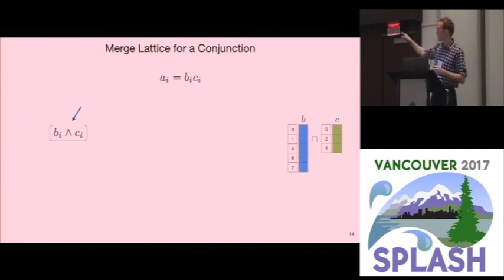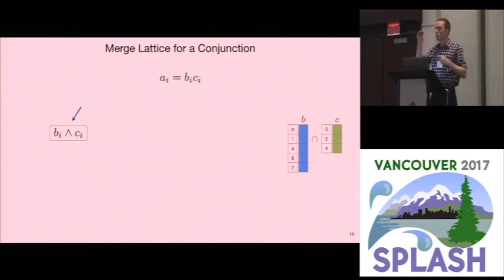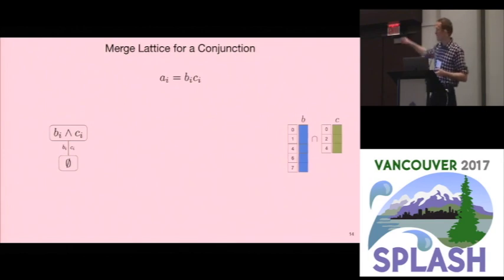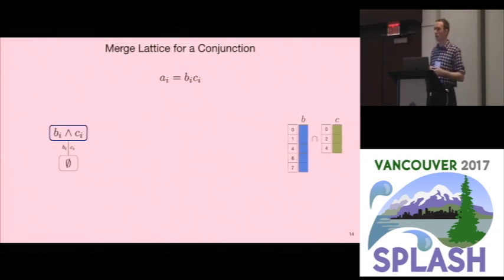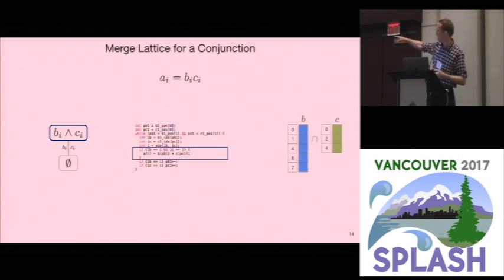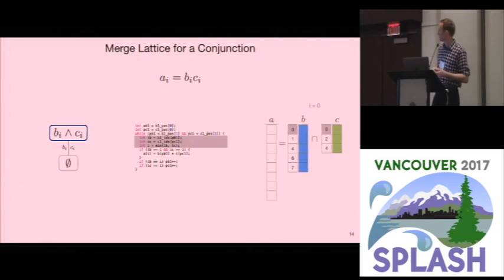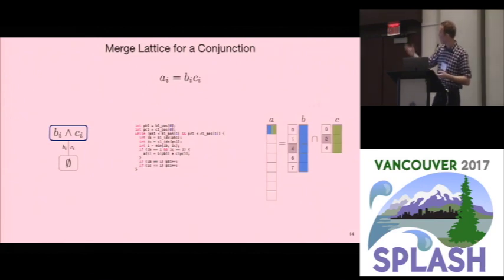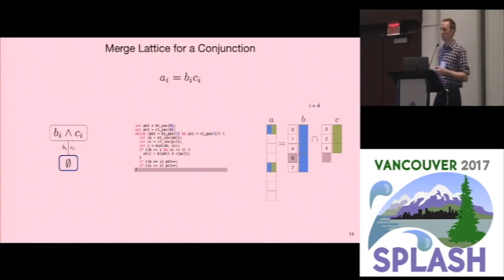A merge lattice has one point here, which says two things: iterate over B and C while both have values left, and at each point compute a value if both B and C have a value at that point. When either runs out of values, we drop to the bottom of the lattice and we're done. We generate code lattice point by lattice point. This lattice has one point, so we generate one loop: it computes the min, checks whether both have a value, advances B and C, and keeps going until C runs out of values — then the loop fails and we're done.